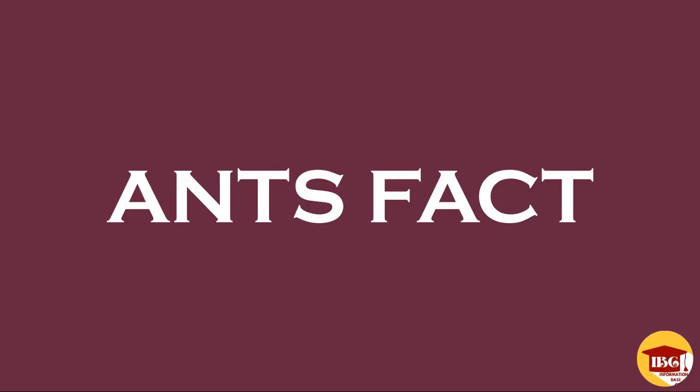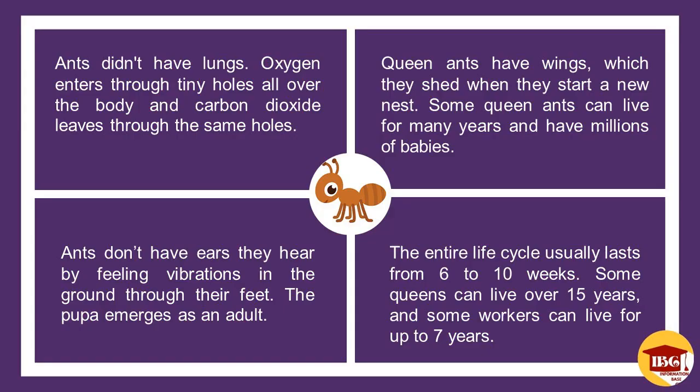A general fact is that ants don't have lungs. Oxygen enters through tiny holes all over the body and carbon dioxide leaves through the same holes. Queen ants have wings which they shed when they start a new nest. Some queen ants can live for many years and have millions of babies. Ants don't have ears — they hear by feeling vibrations in the ground through their feet. The pupae emerge as adults, and the entire life cycle usually lasts from 6 to 10 weeks. Some queens can live over 15 years, and some workers can live for up to 7 years.